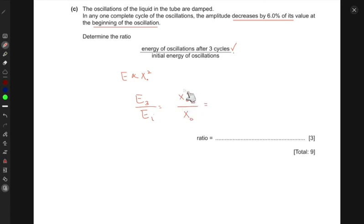How would we figure out the amplitude after three cycles? It decreases by 6% of its value. So if it's decreasing, it should be 1 minus 6%, which is 0.06. This gives 0.94. So it would decrease to 0.94 of the initial displacement or amplitude.